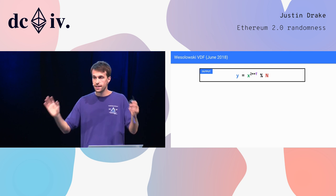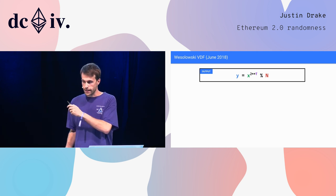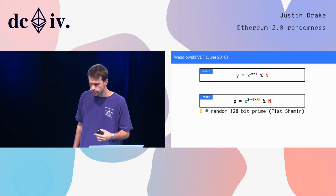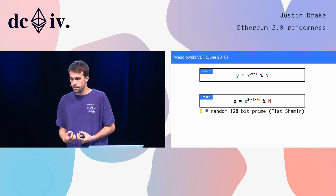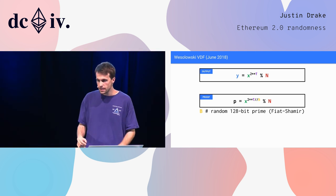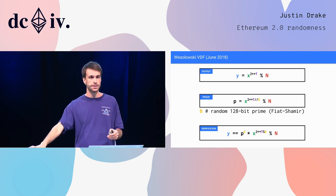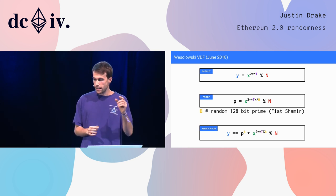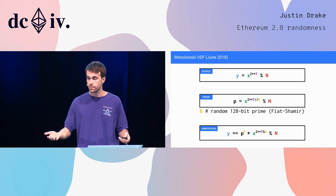Let's go through the whole VDF scheme. The output is x to the 2 to the t mod n. The proof is based on a challenge-response scheme: a random challenge is given to the person building the proof, and they build the proof as shown. You can make it non-interactive with the Fiat-Shamir scheme. Verification is just checking this equality — very fast, about one millisecond on a single core, essentially two small exponentiations and a multiplication. This is the scheme by Benjamin Wesolowski from June 2018.